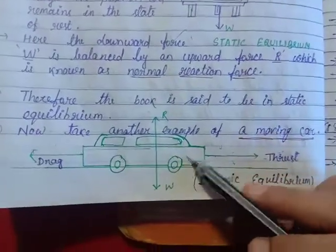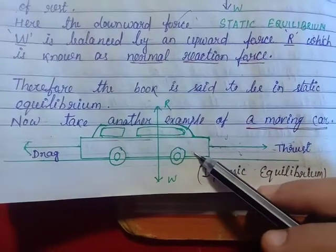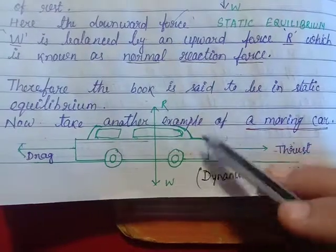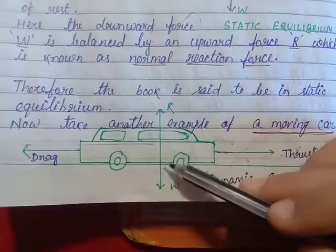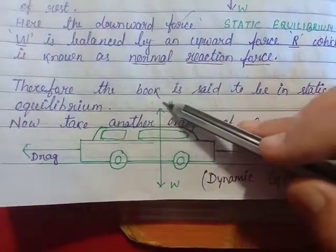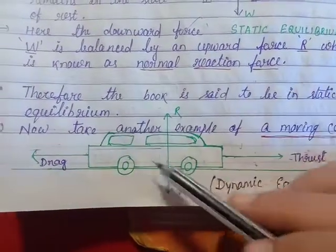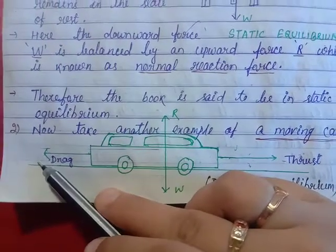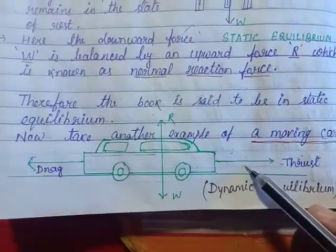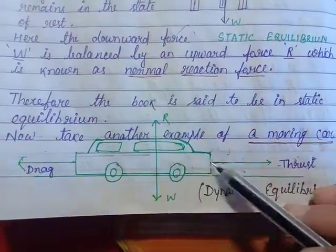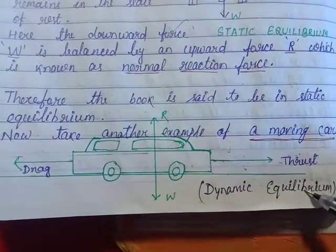For dynamic equilibrium, consider a moving car, an aeroplane flying at a certain height, or a raindrop falling from the sky. Each continues its state of motion because the downward force W and the upward normal reaction R cancel each other, and the backward frictional or drag force and the forward thrust also cancel each other. The net resultant force is zero, allowing the body to continue in motion — this is the dynamic equilibrium condition.